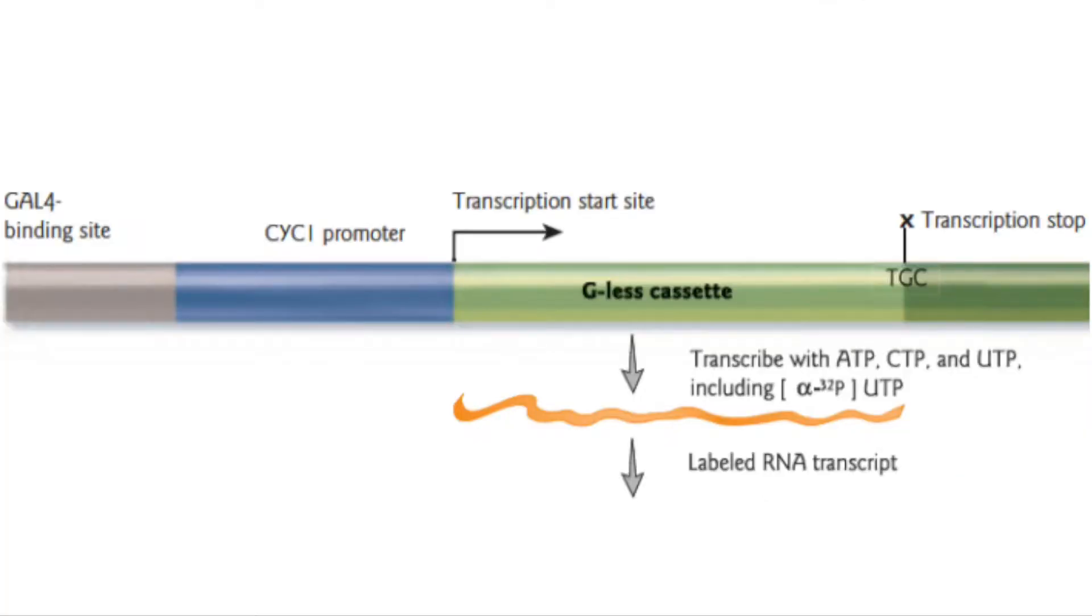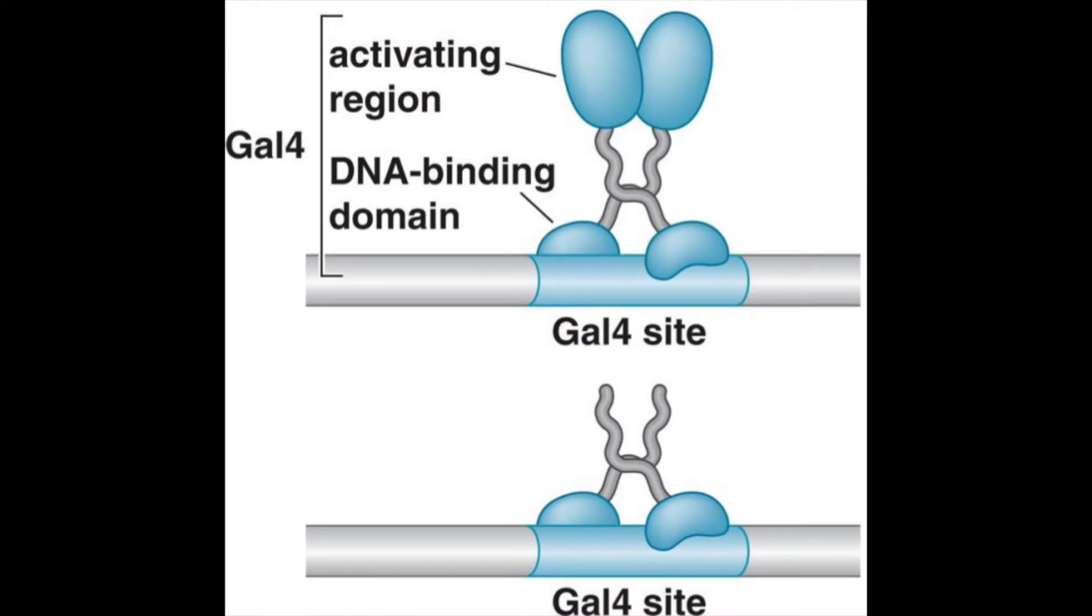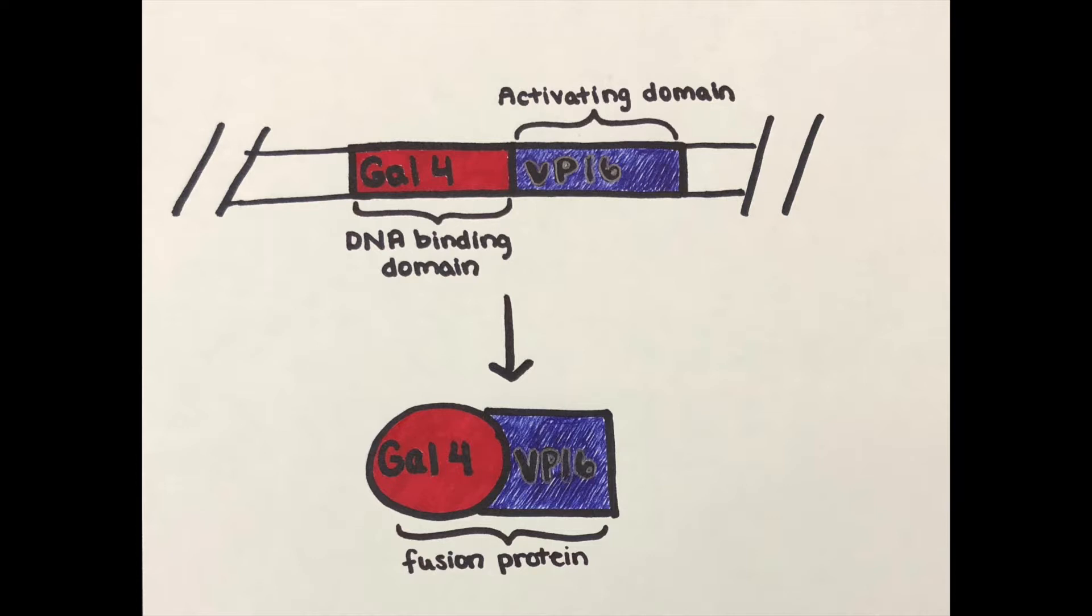Scientists inserted a CYC1 promoter and a GAL4 binding site just upstream of the G-less region. GAL4, a known activator, binds the GAL4 binding site and increases transcription by recruiting transcription machinery that make up the pre-initiation complex. In this specific experiment, they used a GAL4-VP16 activator hybrid. This hybrid has the DNA binding domain of GAL4 and the activating domain of VP16. From now on, we will refer to this hybrid protein as activator. Scientists added different amounts of mediator, measured in micrograms, to test its effect on the amount of transcription.